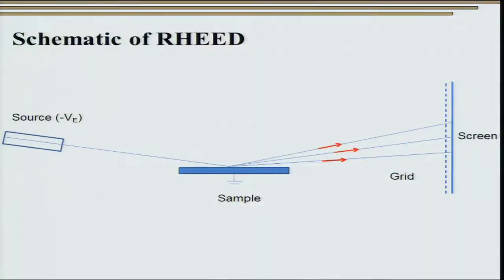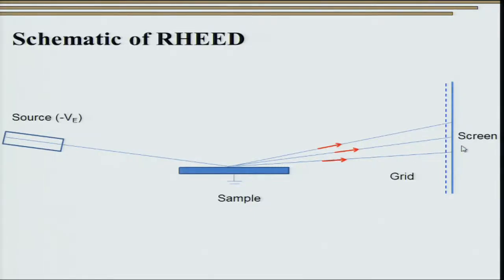Looking at the geometry of reflection high energy electron diffraction: the source is shown here and the sample here. The electrons are incident at a very small angle — this figure is a bit exaggerated; the angle with the surface is very, very small. Once the electrons diffracted from the surface, we put a grid and apply a negative voltage to repel all inelastically scattered electrons, so only elastically scattered electrons reach the screen and produce the diffraction pattern.